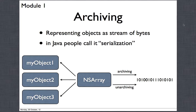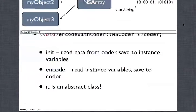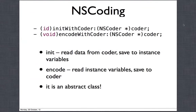If you convert an object into bytes you also have to convert everything inside the object. Since we have object-oriented code, we could have many objects inside another object, so you need to convert everything inside. Of course, since this is a common task, we already have something for it in the Objective-C libraries — we don't have to worry about serialization in the most fundamental way.